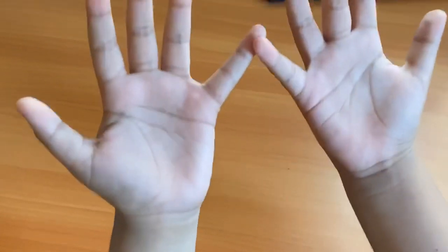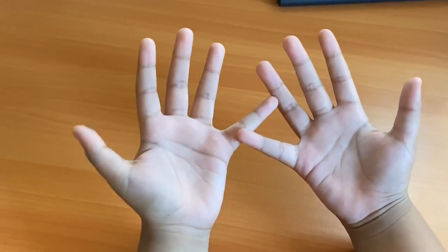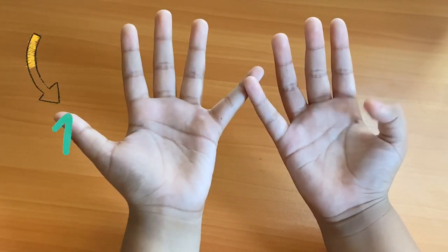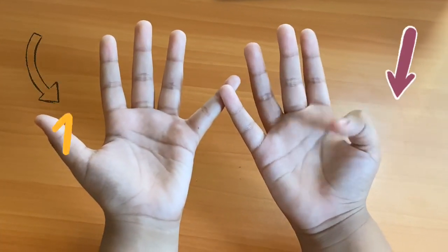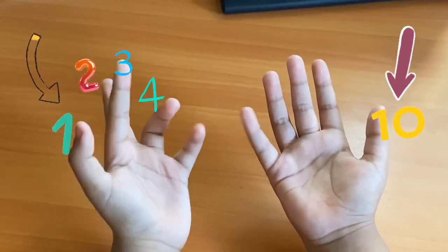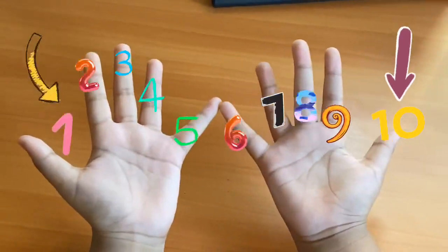So, the fingers represent 1 to 10. The left thumb is 1 and the right thumb is 10. So, 1, 2, 3, 4, 5, 6, 7, 8, 9, 10.